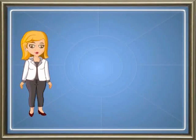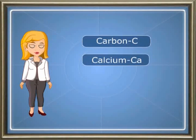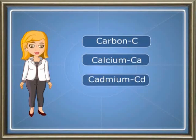You may be wondering: what if the names of two elements start with the same letter? In such cases, the second letter or the prominent letter is added to the first letter. Whenever two letters are used, the first letter is always capital and the second letter is always small. For example, the symbol of carbon is C, but the symbol of calcium is Ca. Similarly, cadmium is Cd, chlorine is Cl.